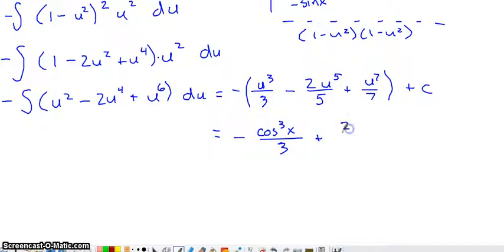so that'll make this a plus two cosine to the fifth of x over five, and then minus, distribute the negative into that as well, cosine to the seventh of x over seven, leave your plus c there, and there you have it.